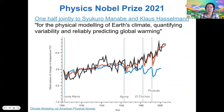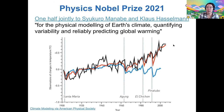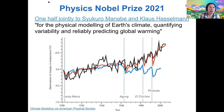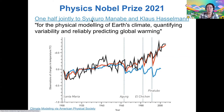There was actually a physics Nobel Prize awarded just last week. This year's Nobel Prize — half of it went jointly to two researchers for the physical modeling of Earth's climate, which quantifies the variability and reliably predicts global warming. If you're curious, this APS article is actually a pretty good one.